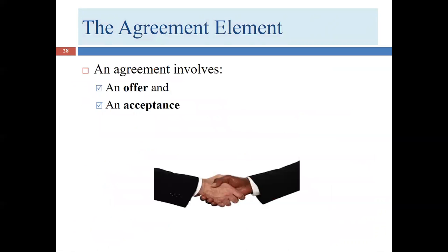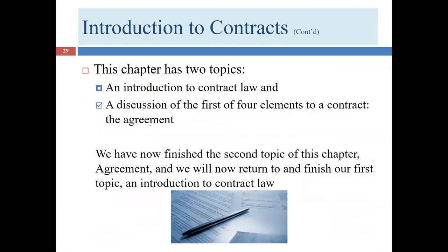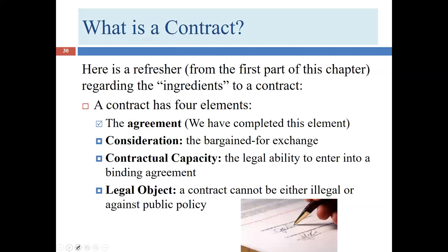We've completed all of the elements of an agreement — both offer and acceptance — and thus all elements of our second topic. Now we're going back to the introduction to contract law. Consideration is the bargain-for exchange. Contractual capacity is the legal ability to enter into a binding contract — the main impediments are minority (under age 18) and insanity (being so mentally ill you're not dealing with reality). Chapter 10 covers consideration and Chapter 11 covers the remaining elements.